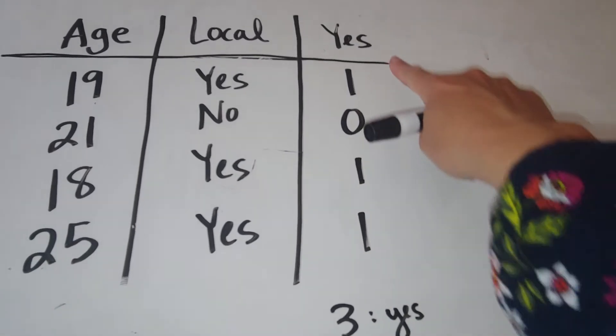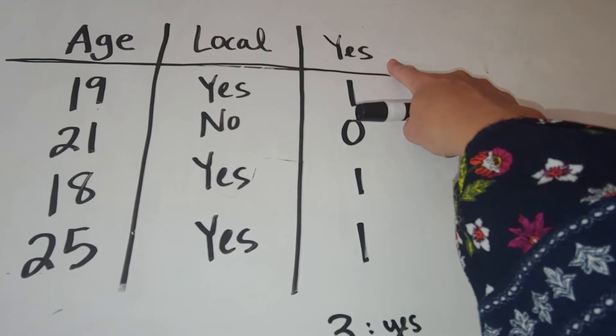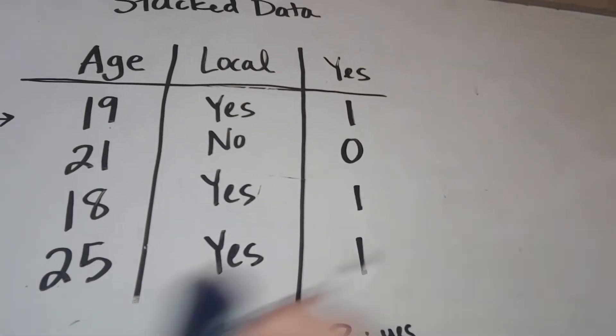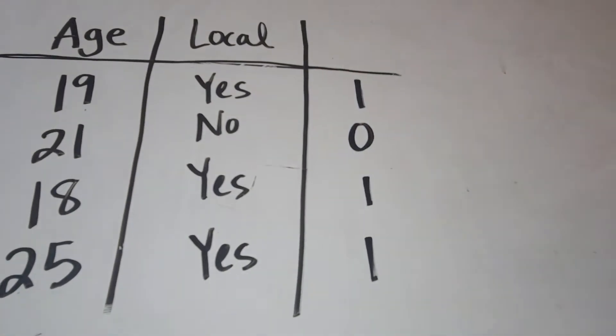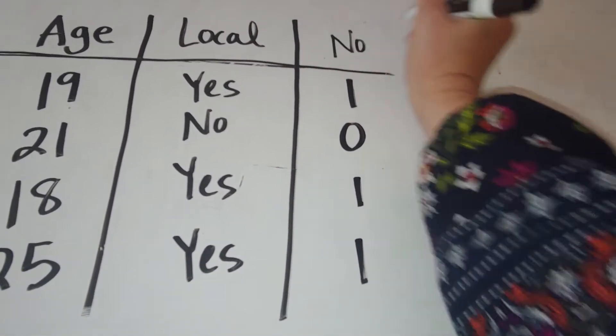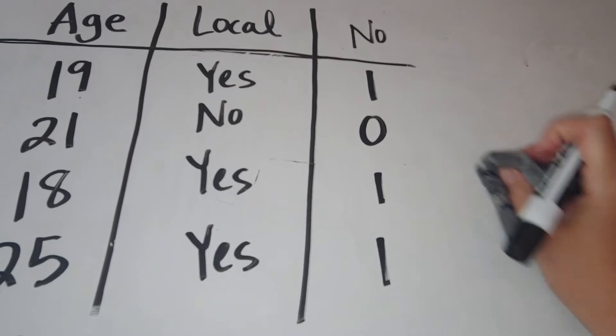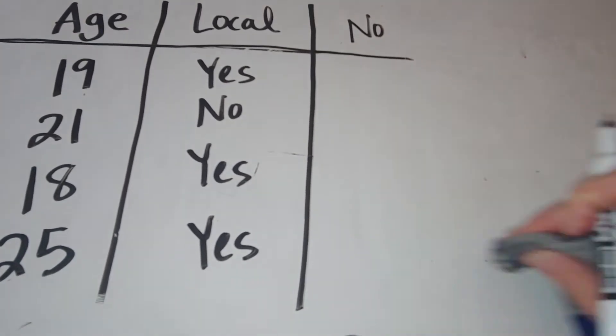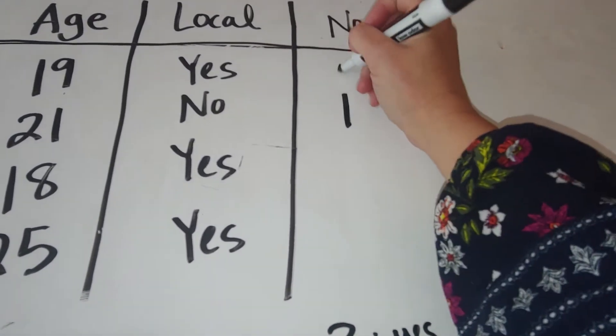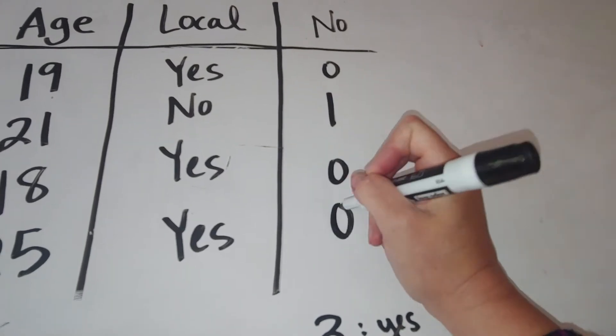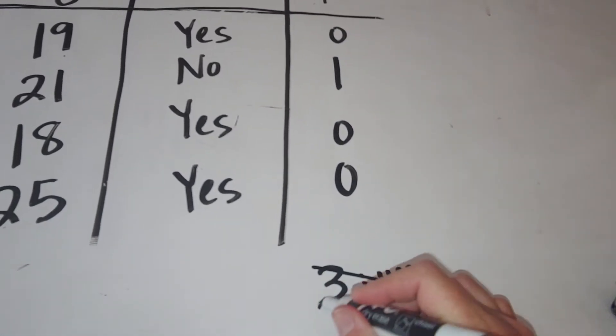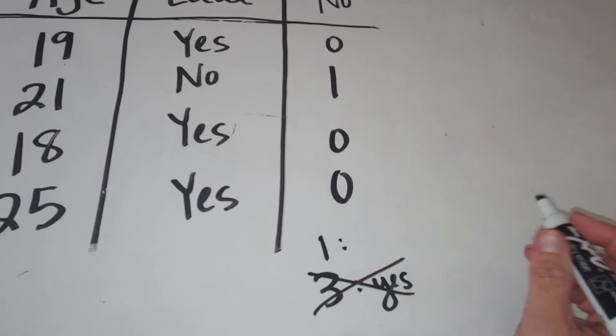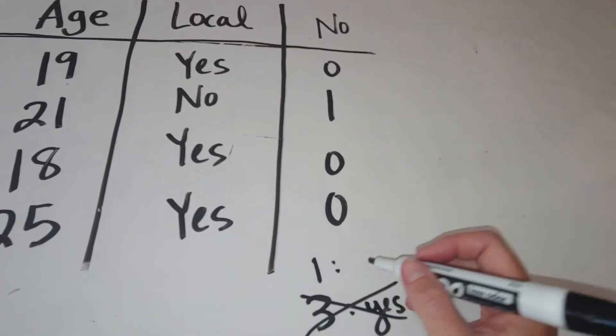Now, you don't have to code it with the word yes up here. If you decided instead to code it with no, what would happen is that all the no responses would be ones and everything else would be zeros. Now, the total of this is one. But that one doesn't represent yeses anymore. That one represents noes.